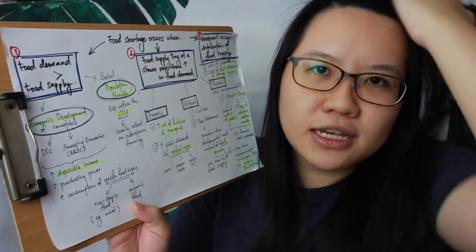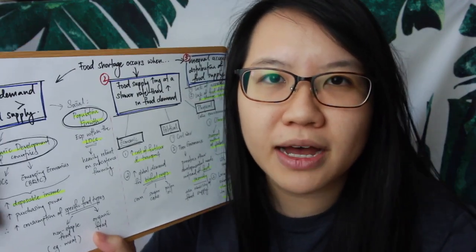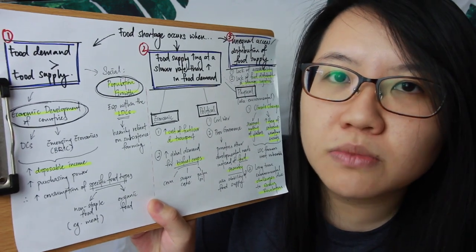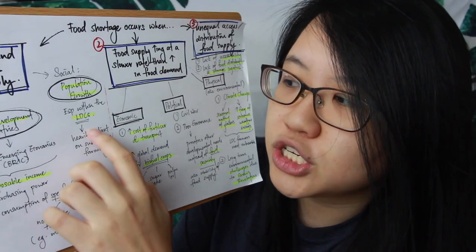The social factor explaining increased demand for food is simply population growth. By 2050 the world's population will reach up to 10 billion people. Population growth is most rapid within LDCs, and most LDCs are heavily reliant on subsistence farming — using traditional methods, relying on manual labor, and using traditional tools — so output is very limited. With greater numbers of people and greater demand, they may not be able to produce sufficient food, leading to food shortage particularly within LDCs.